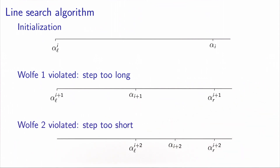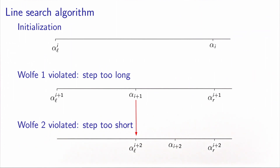If αi violates the second Wolfe condition, it means the step is too short. In this case, we update the value of the lower bound αL using this value of the parameter, keep the same value for αR, and the new value αi+2 is equal to the midpoint of the interval between the new αL and the new αR. We continue like this depending on which condition is violated, and we stop when both conditions are verified.